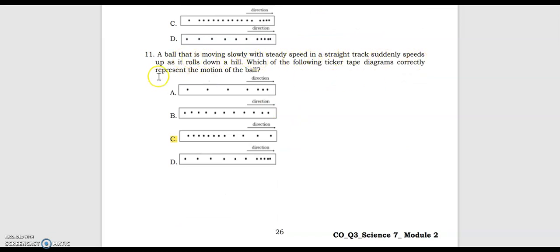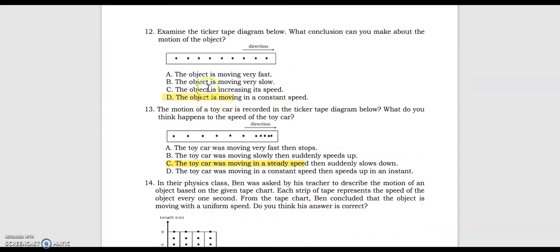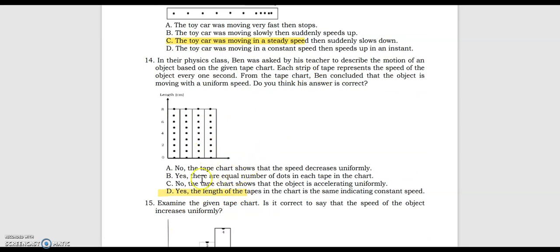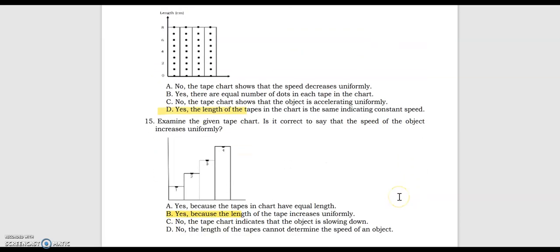Number 11, a boulder moving slowly at steady speed on a straight track suddenly speeds up as it rolls down a hill — the answer is letter C. Number 12, using this ticker tape diagram, the object is moving at a constant speed. Number 13, using this ticker tape diagram, the toy car was moving at a steady speed then suddenly slows down. Number 14, the answer is yes — the length of the tapes in the chart is the same, indicating constant speed. Number 15, the answer is yes, because the length of the tape increases uniformly, meaning the speed of the object increases uniformly.